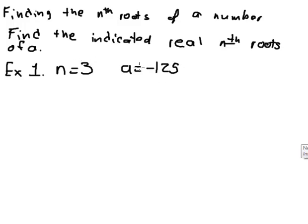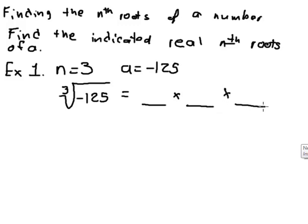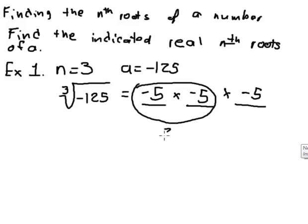If n is odd and the number is positive, you'll have one positive answer. If it's odd and the number is negative, you'll have one negative answer. So we are looking for the third root of negative 125 — some number that if you multiply it times itself three times, you get negative 125. The answer is negative 5, because negative 5 times negative 5 is positive 25, and positive 25 times negative 5 is negative 125.